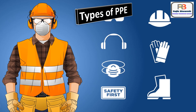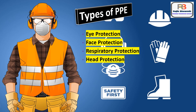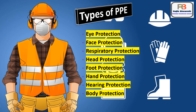Now let us understand how many types of PPEs are there: eye protection, face protection, respiratory protection, head protection, foot protection, hand protection, hearing protection, body protection, and fall protection.